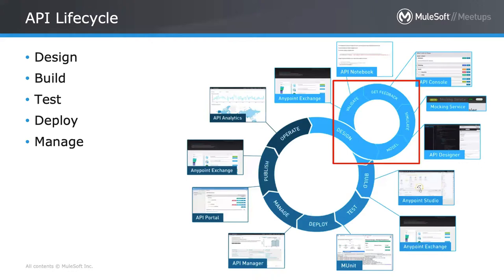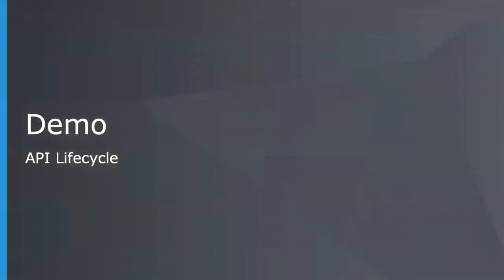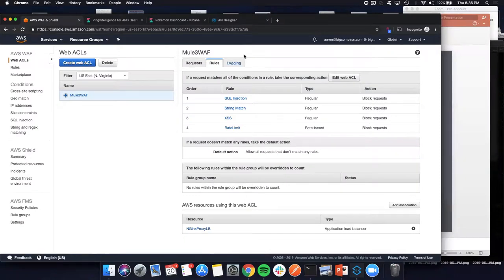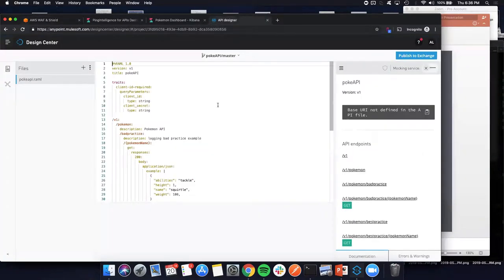Give life to your flows in the build phase; this happens in Anypoint Studio. With any good project lifecycle you have a QA phase — run your MUnit tests, regression tests, whatever your organization's standards are. That brings you to the deployment phase. Once you go through QA successfully, deployment happens in Runtime Manager if you're deploying to CloudHub. Once through all four pillars, you can start to manage and secure your API.